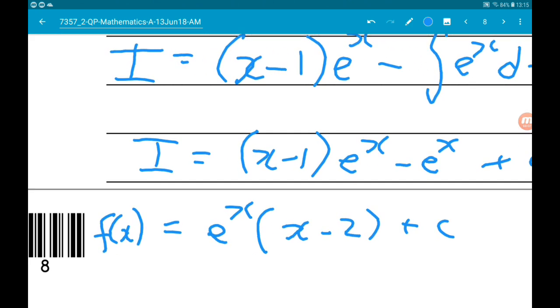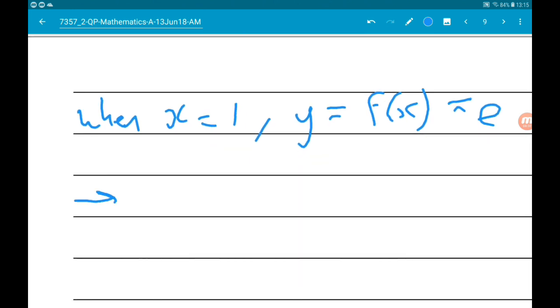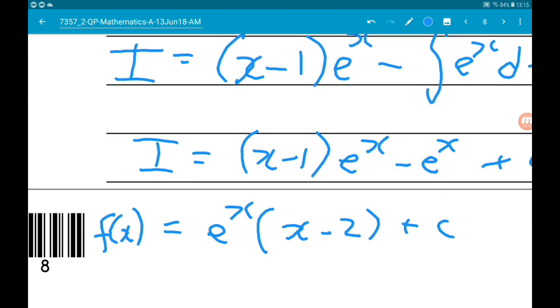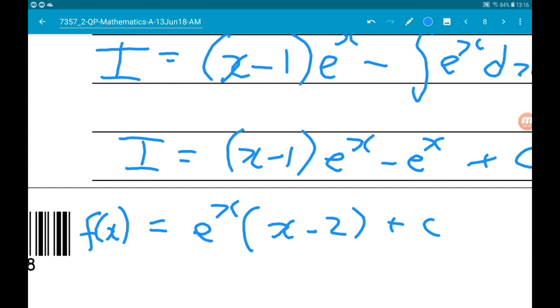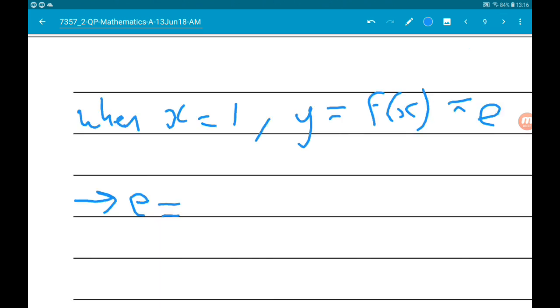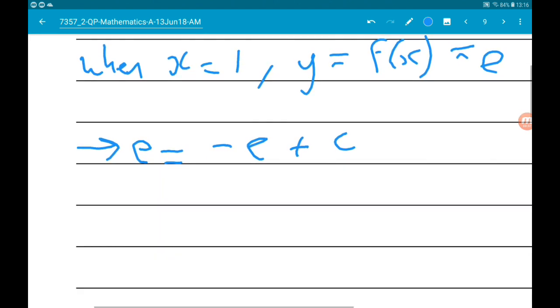So using that, we can say that e is equal to, so we're substituting in x equals one, so we get e times one minus two, which is minus one. So we're going to get minus e, add c, therefore, c is equal to two e.